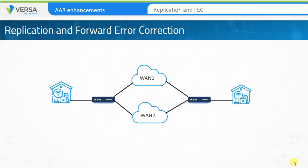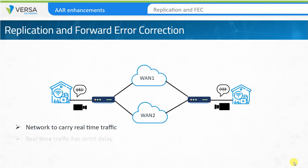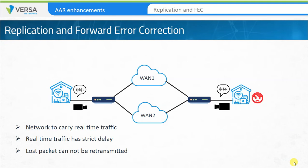Before we discuss replication, let's consider a scenario where the network is required to carry real-time traffic, such as voice or video, between sites. Real-time traffic has strict delay requirements, and in case of a lost packet, retransmission is not an option — the customer experience can become very poor in such cases. Packet replication can help in such situations. In its simplest form, packet replication enables creating a copy of each packet at the ingress to the WAN. A copy of the packet is then sent over each available WAN link.